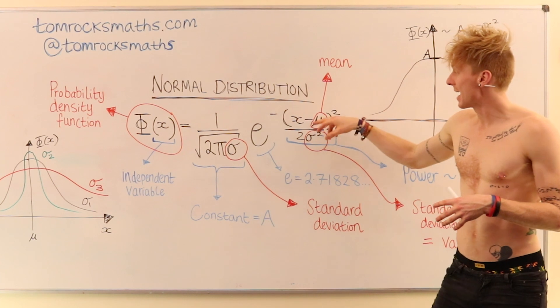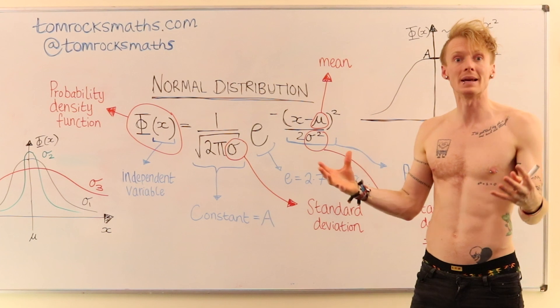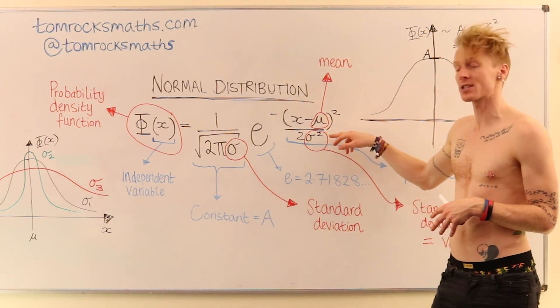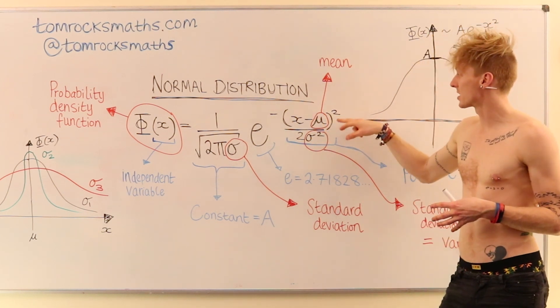And this depends on our independent variable x. So it depends on the value in the data that you want to know the probability of hitting. We then have a 2 sigma squared on the denominator. And in the top, we have this mu symbol, mu.